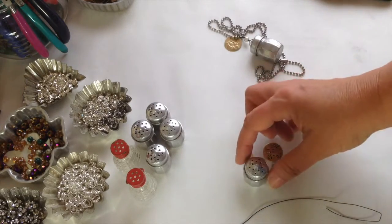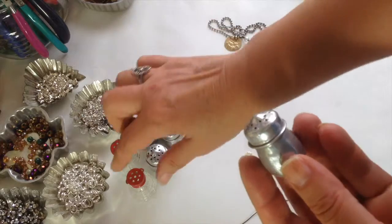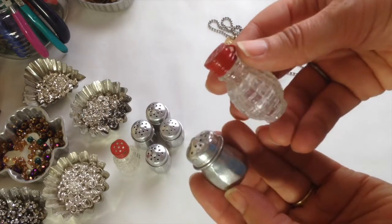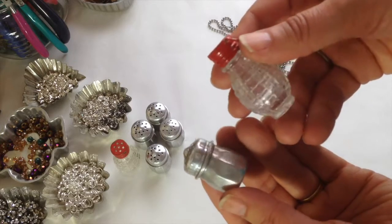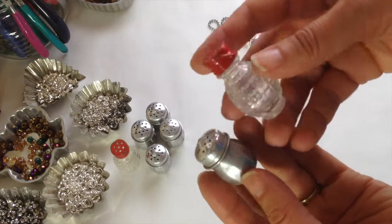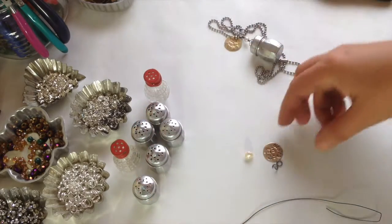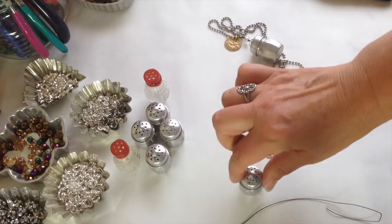I always start off with the tiny, individual-sized salt shakers like these. I use the larger ones for Christmas ornaments or for photo holders, but for necklaces, the little tiny ones are pretty good. The bigger ones are just a little too big. Some people like them, but it's a little too big for me.